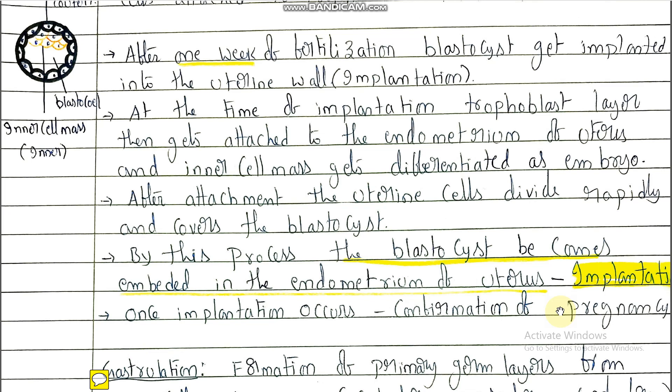Once fertilization occurs, the zygote starts development and the blastocyst is formed. The blastocyst attaches to and becomes embedded in the uterus wall — implantation occurs — and that is the confirmation of pregnancy.